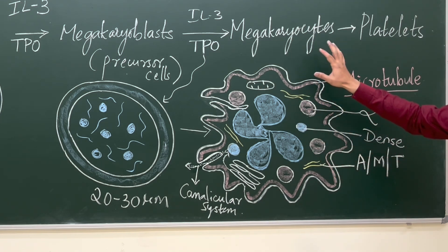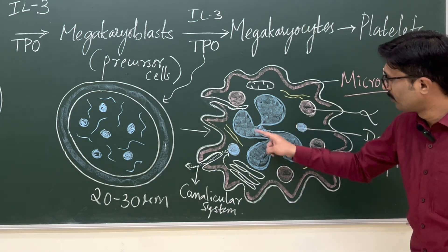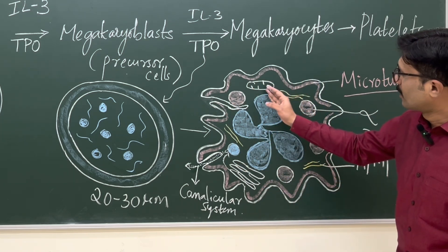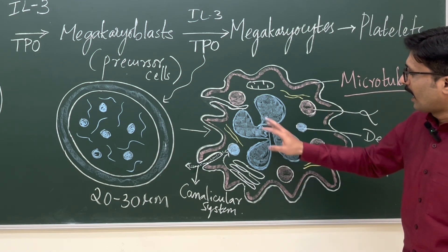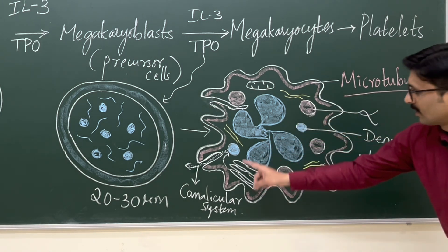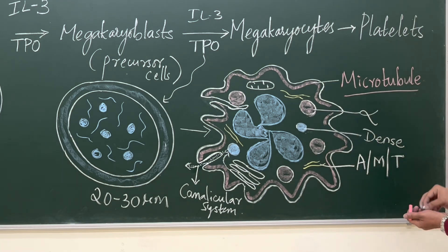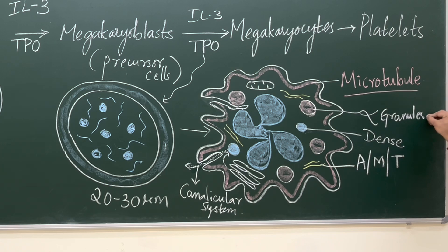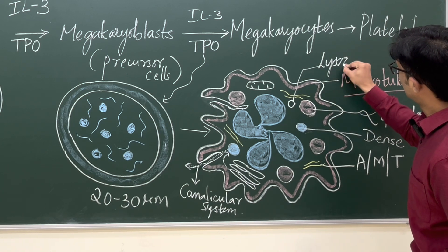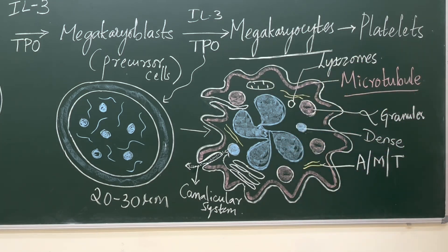This is the mature megakaryocyte. Its nucleus is multi-lobed, with 4 to 16 lobes. The cytoplasm is very abundant and contains cytoplasmic organelles — mitochondria, endoplasmic reticulum, Golgi complex — and various types of cytoplasmic granules: dense granules which are small and few in number, large alpha granules which are more numerous, and also lysosomes.